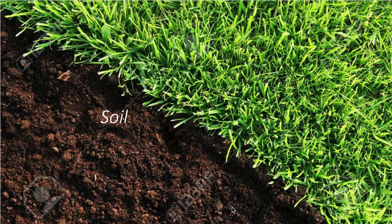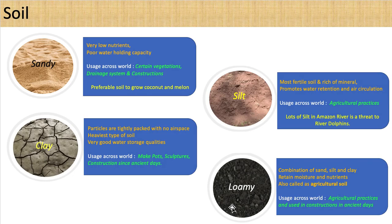Let's learn about soil next. Soil is an upper layer material which is formed on earth's surface. There are different types of soil such as sandy, clay, silt, and loamy. Here I have listed the soil type and how they are used for different purposes.